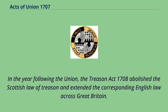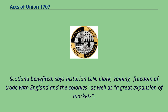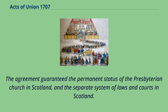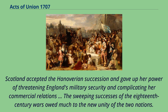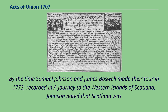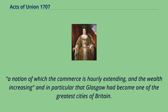Scotland benefited, says historian G.N. Clarke, gaining freedom of trade with England and the colonies as well as a great expansion of markets. The agreement guaranteed the permanent status of the Presbyterian Church in Scotland and the separate system of laws and courts. Clarke argued that in exchange for the financial benefits and bribes England bestowed, what it gained was of inestimable value: Scotland accepted the Hanoverian succession and gave up her power of threatening England's military security and complicating her commercial relations, and the sweeping successes of the 18th century wars owed much to the new unity of the two nations. By the time Samuel Johnson and James Boswell made their tour in 1773, Johnson noted that Scotland was 'a nation of which the commerce is hourly extending and the wealth increasing,' and in particular that Glasgow had become one of the greatest cities of Britain.